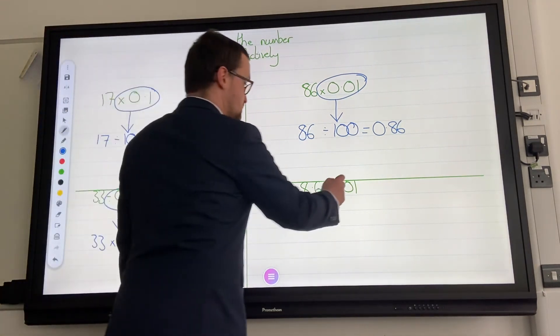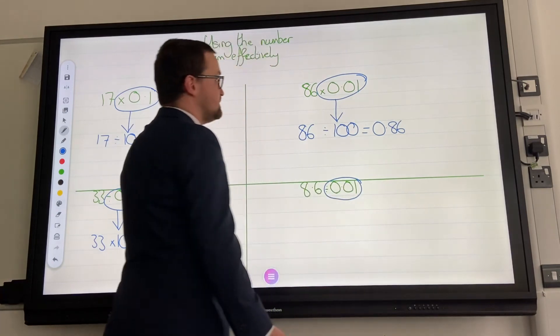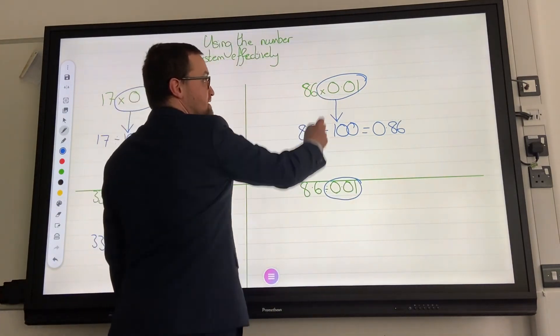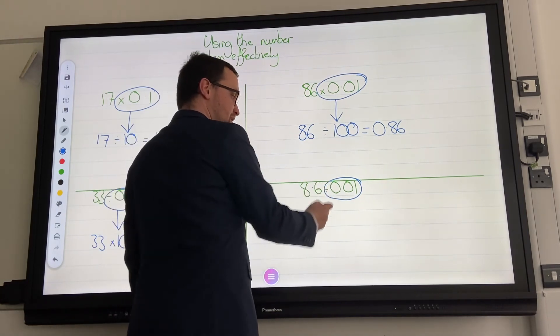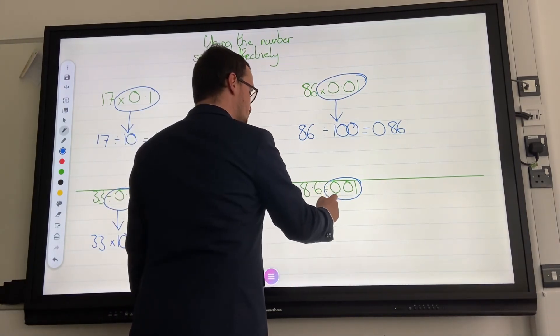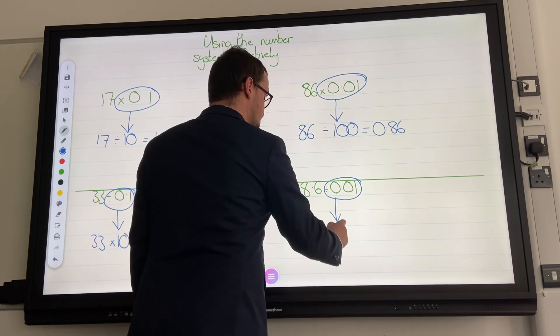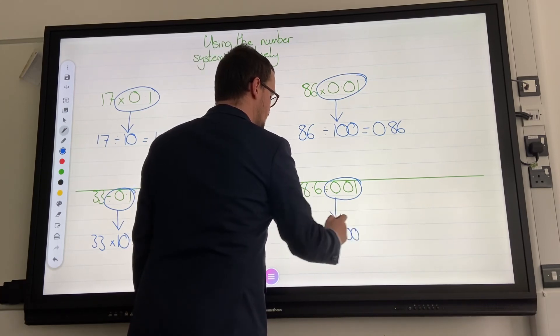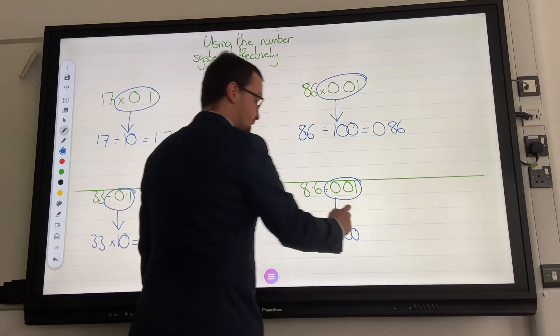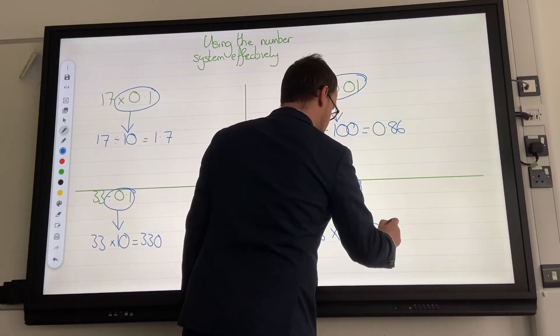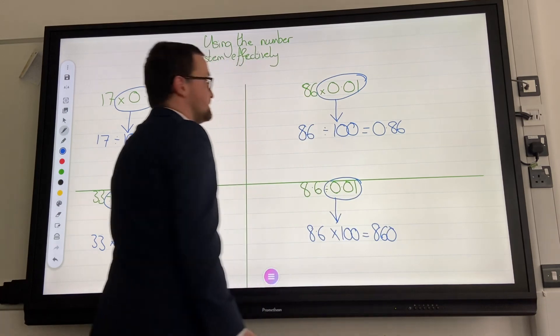Same again. That's not that nice. When we had times by 0.01 there, we were dividing by 100. So, when we're dividing by 0.01, we are going to be timesing by 100, and 8.6 doesn't do anything, so we end up with 800 and 60.